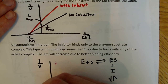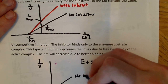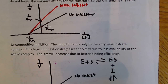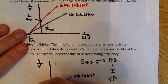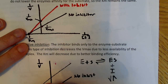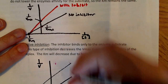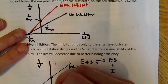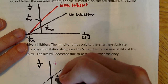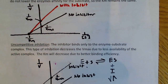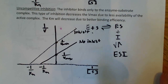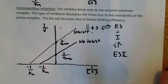On the Lineweaver-Burk plot for uncompetitive inhibition, both the X-intercept (negative 1/Km) and Y-intercept (1/Vmax) shift — reflecting changes in both Km and Vmax. The inhibited line is parallel to or different in intercept from the uninhibited line, showing both parameters change. This wraps up the three types of enzyme inhibition.